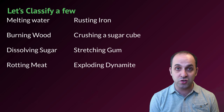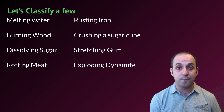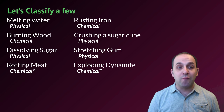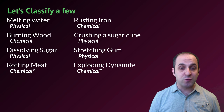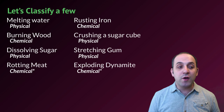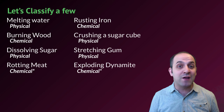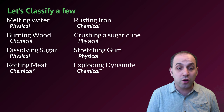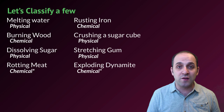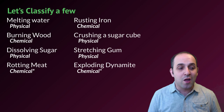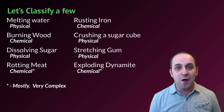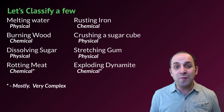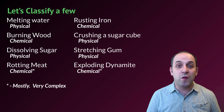Let's practice by classifying some examples. Pause the video, write down your answers, then let's check. Melting water is a physical change — we still have water at the end. Rusting iron is a chemical change because we're making new compounds. Burning wood is similar — we end up with compounds we didn't start with. Crushing a sugar cube and dissolving sugar are both physical changes, since we still have sugar. Stretching gum just changes its shape — physical change. Rotting meat and exploding dynamite are chemical changes, though these are complex processes involving both physical and chemical changes.